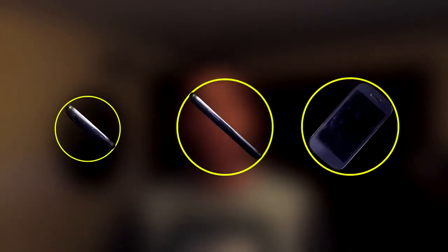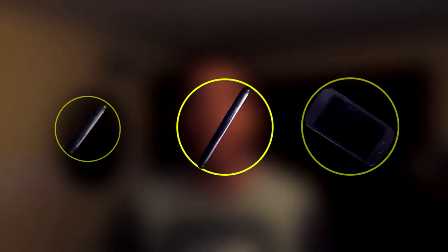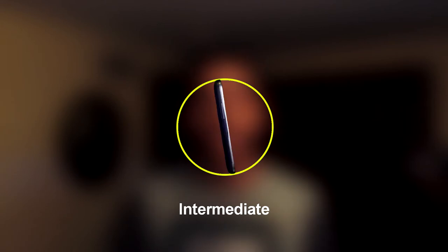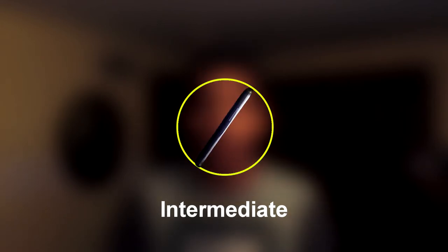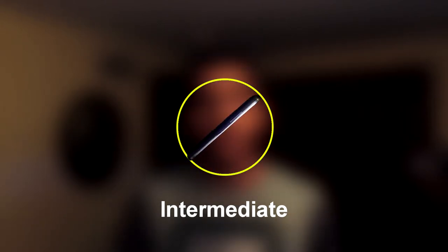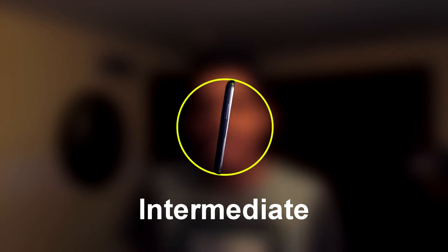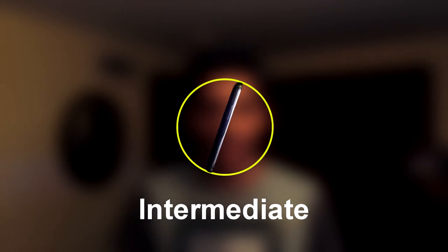So if you were to rotate the phone about its intermediate axis — which has the intermediate moment of inertia — you would need just the right amount of intermediate force to rotate it, and that is the axis of instability.